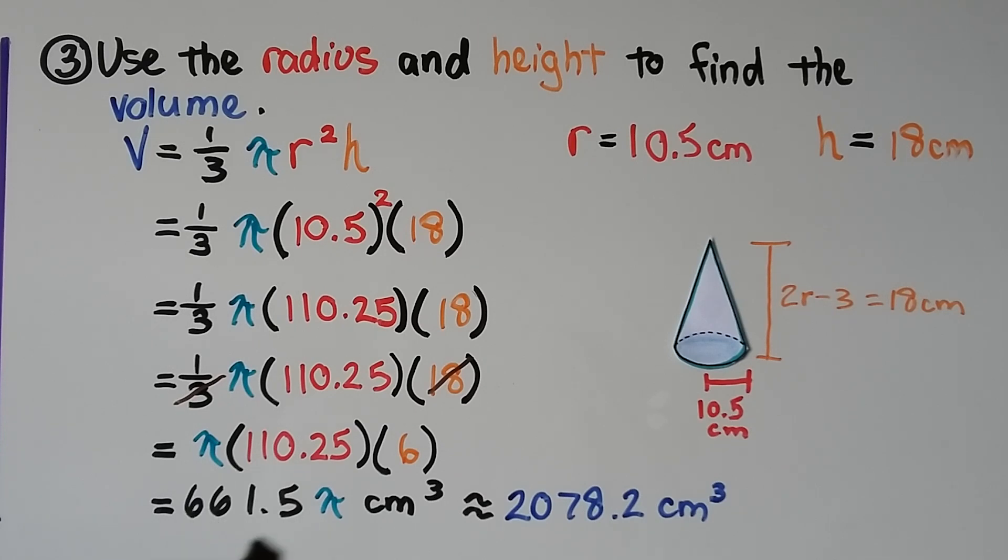So to be a little more accurate, don't multiply it by 3.14 on your calculator. Hit the pi key, all right?